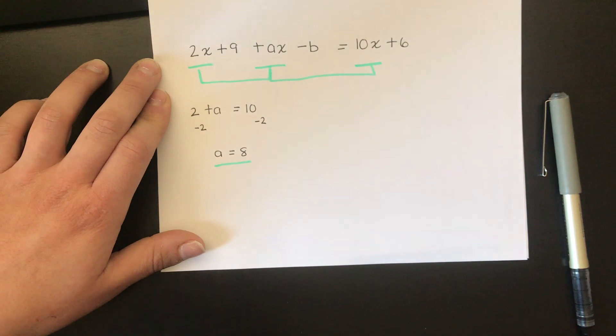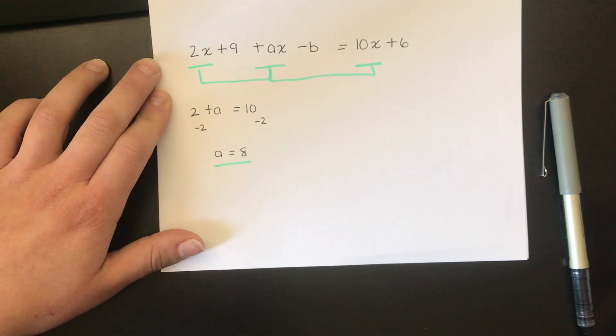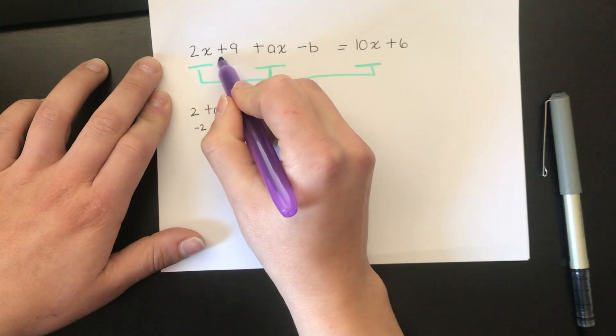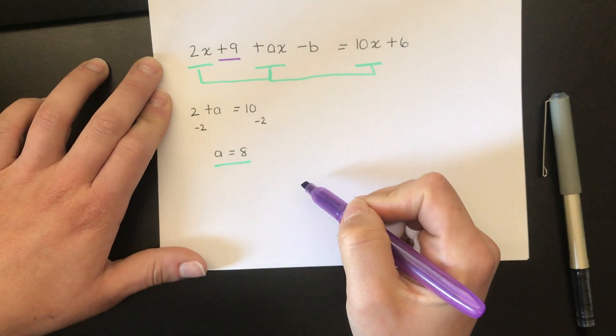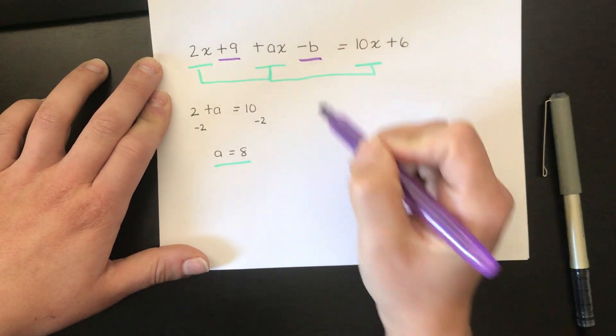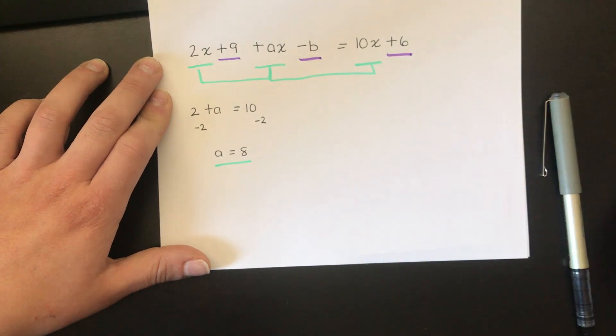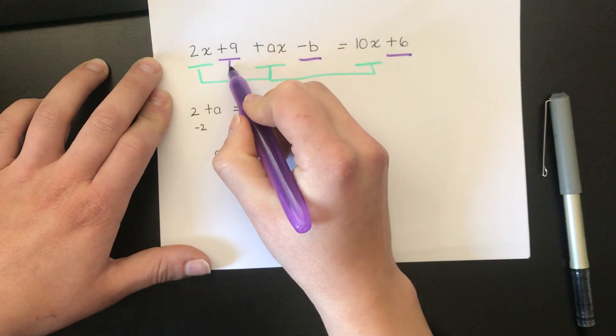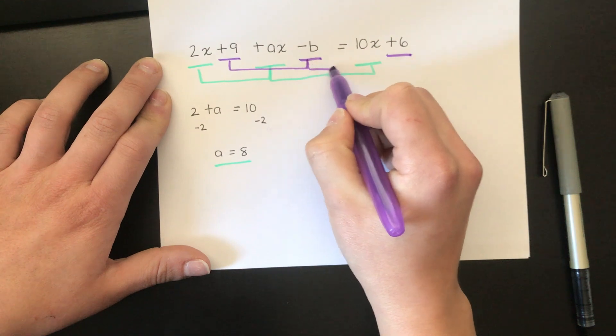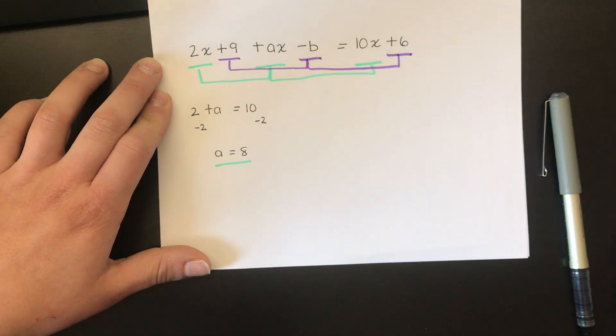Okay, similarly I'm going to look at all the values that don't have any x's in them. I've got positive 9 that doesn't have any x's, negative b that also doesn't have any x's, and plus 6 that also doesn't have any x's. These three things, all these purple bits, all have to be equal to each other.